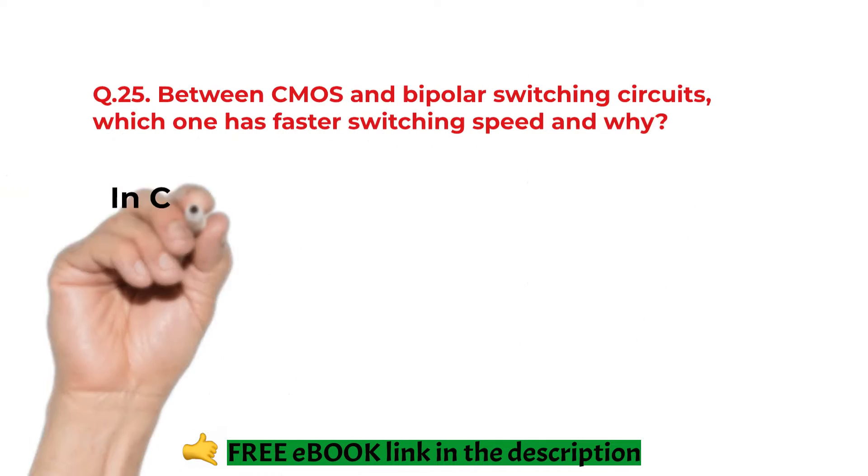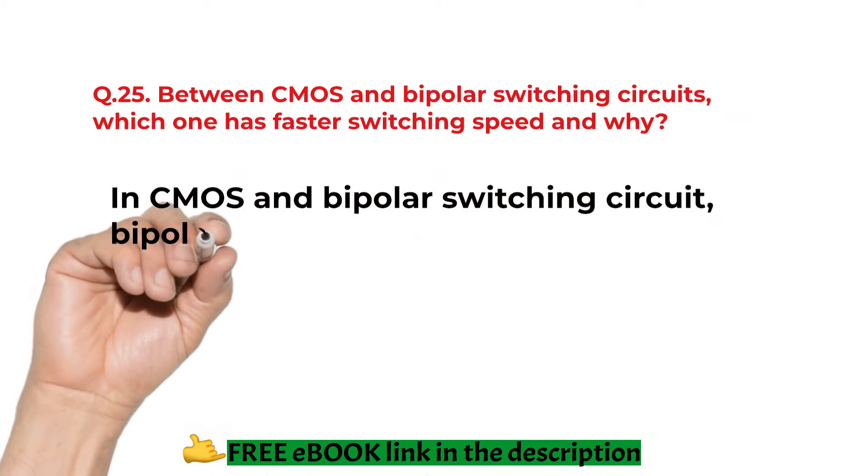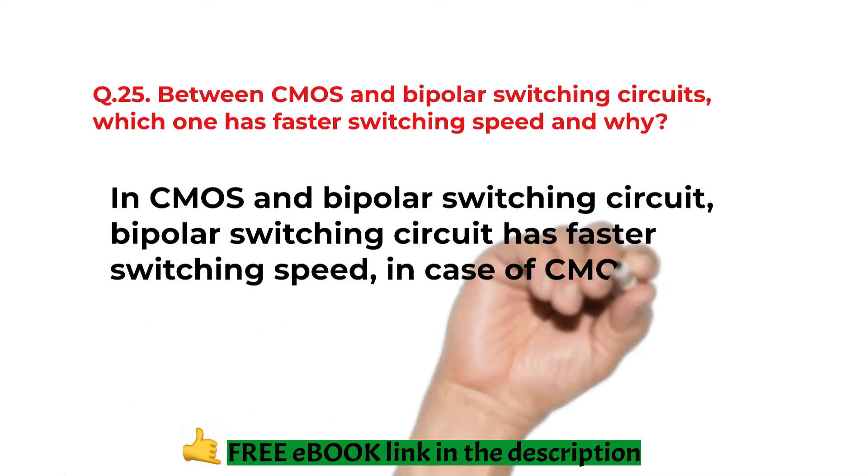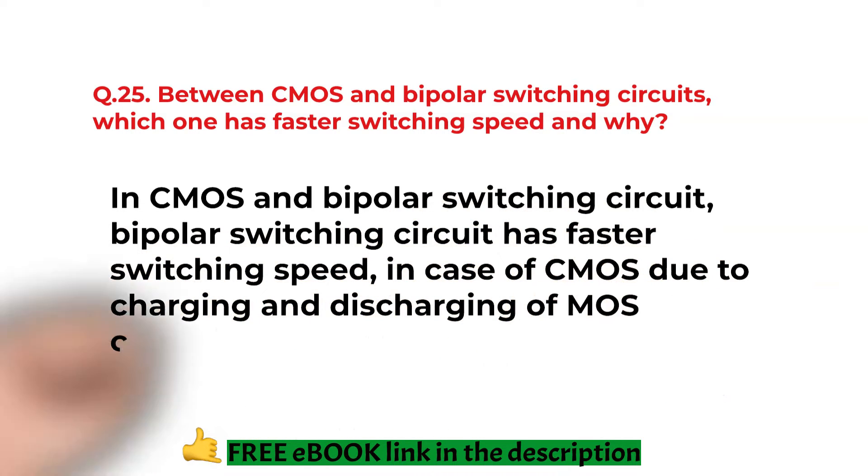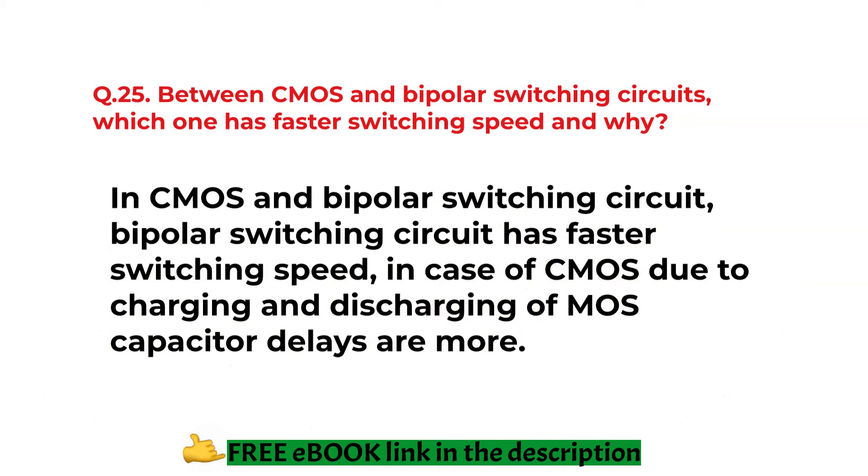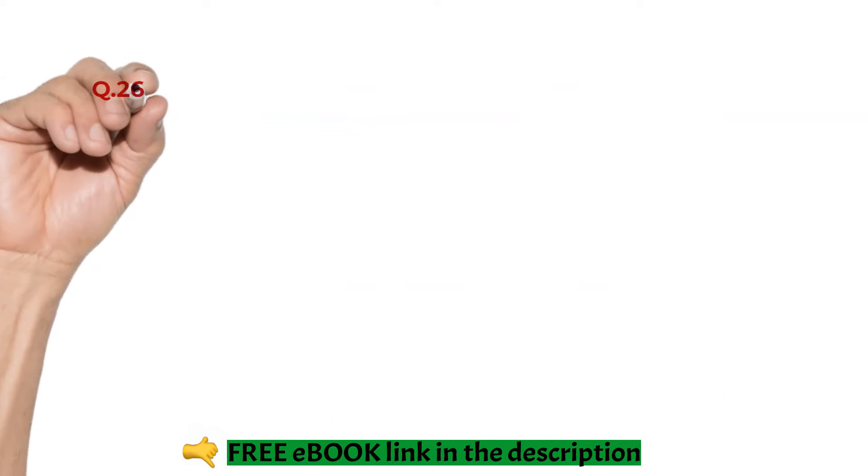Between CMOS and bipolar switching circuits, which one has a faster switching speed? In CMOS and bipolar, bipolar switching has a faster speed. In case of CMOS due to the charging and the discharging of the MOS capacitor delays.